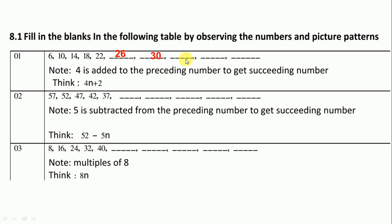Question number 2, here number series is given. Notice: 5 subtracted from the preceding number to get succeeding number. So here for the next number we have to subtract 5 from 37, it is 32.